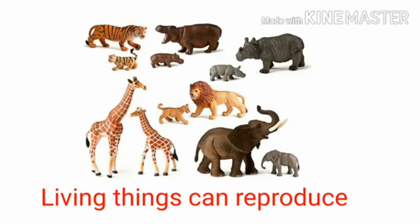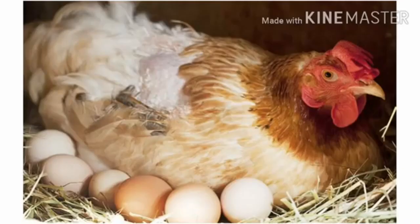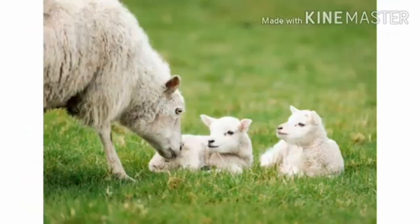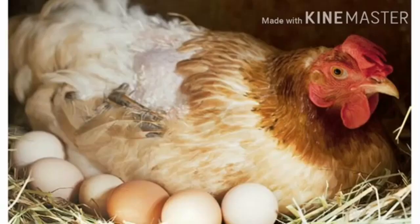Reproduce means living things produce young ones of their own kind. Living things can reproduce in two ways: by laying eggs or by giving birth directly. What are the two types of reproduction? Giving birth and laying eggs.